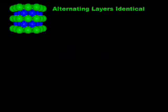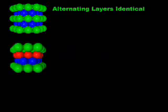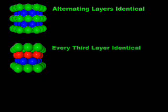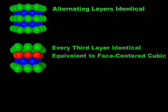The hexagonal close-packed structure consists of close-packed layers of atoms stacked so that every other layer is identical. The cubic close-packed structure consists of close-packed layers of atoms stacked so that every third layer is identical. This structure is identical to the face-centered cube, and therefore has the same occupancy and coordination number.